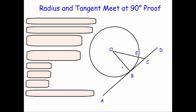To do that, we're going to pretend for a moment that OB is not perpendicular to AD. If it's not perpendicular at this point, there must be another point on line AD where you could draw a line from O that would be a right angle. Let's pretend it's C — so OC is perpendicular to AD.